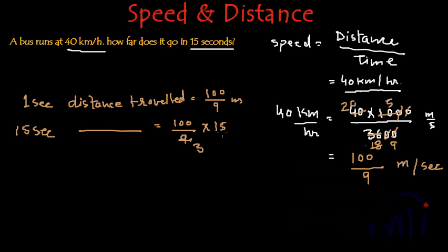3 times 3 is 9, 3 times 5 is 15. Which is 5 times 100, that's 500 divided by 3 meters.